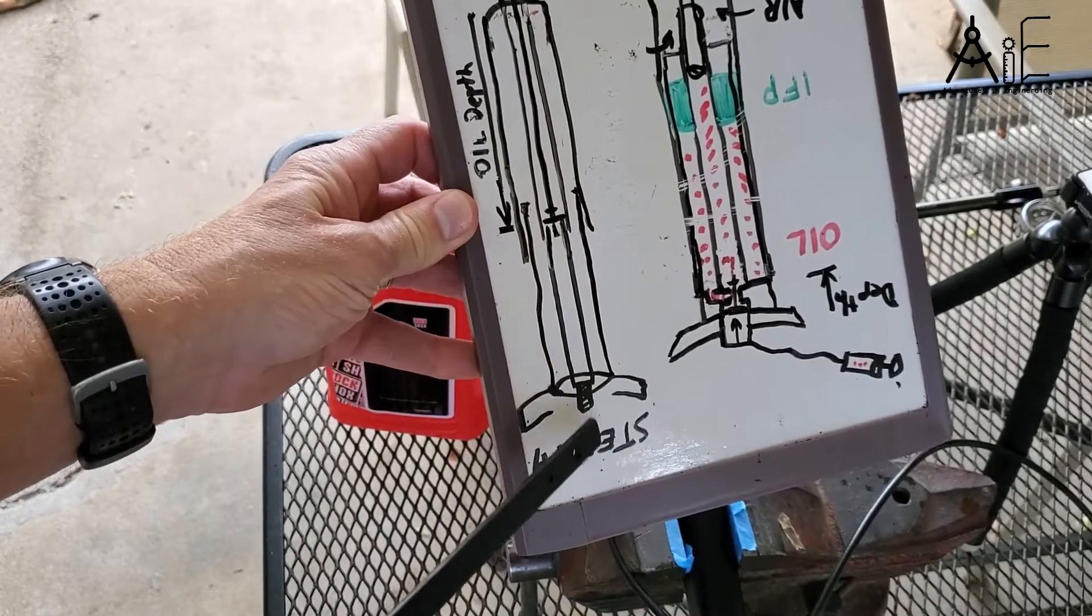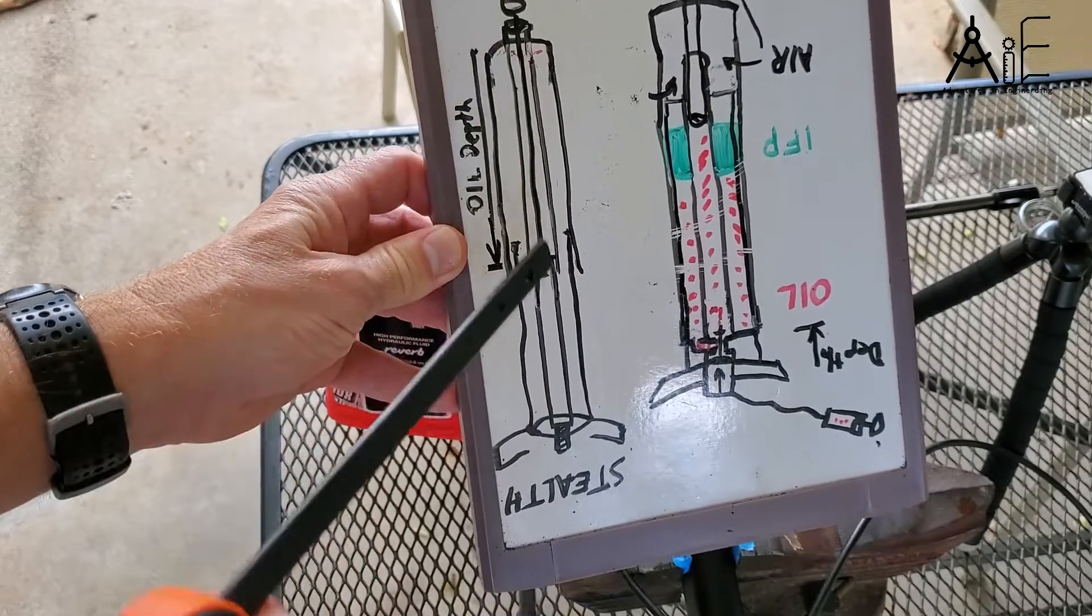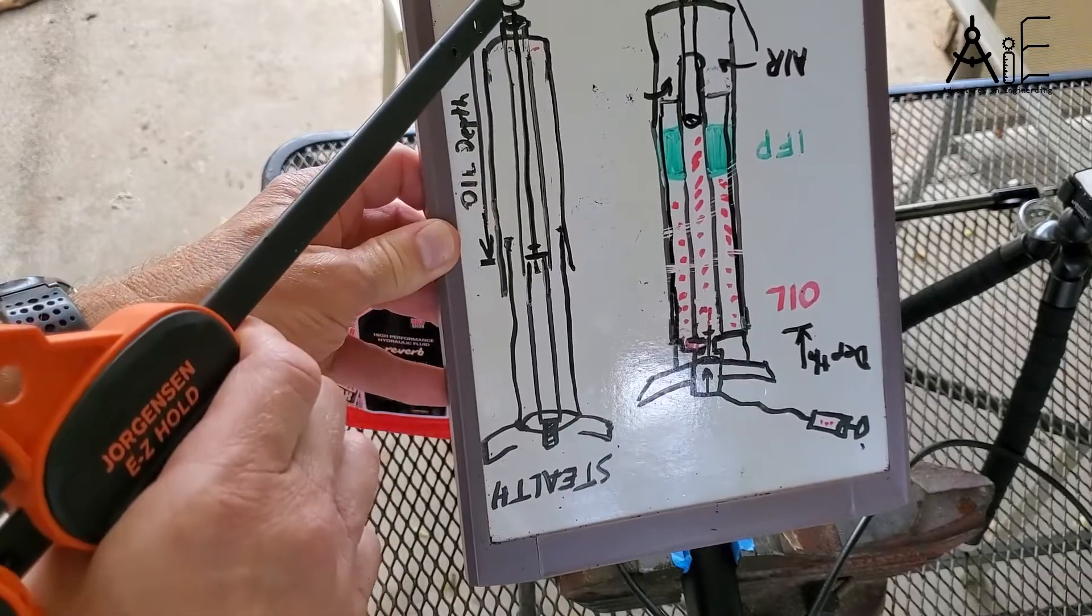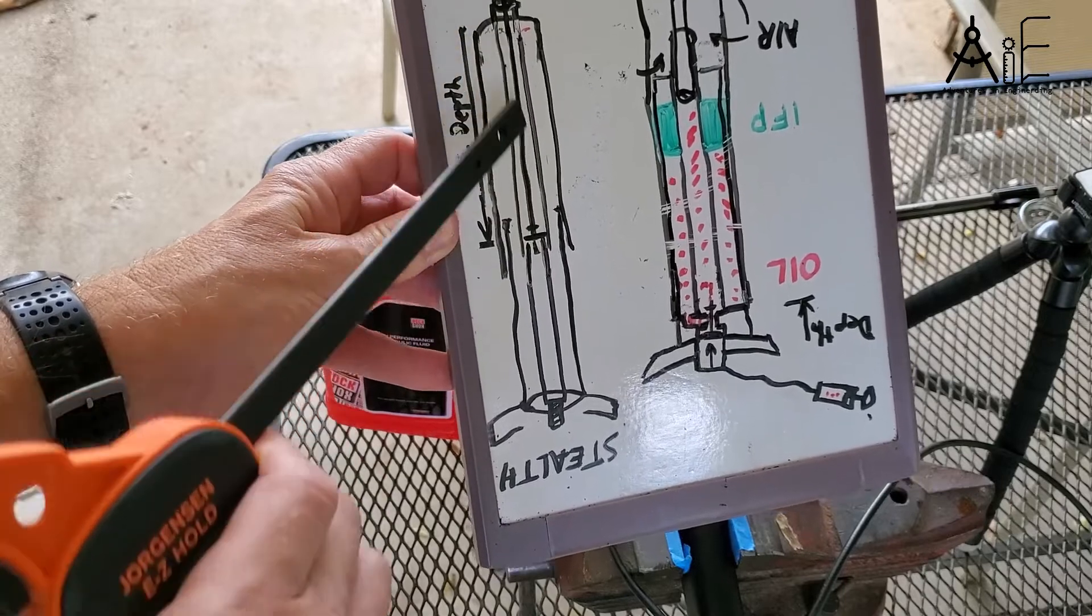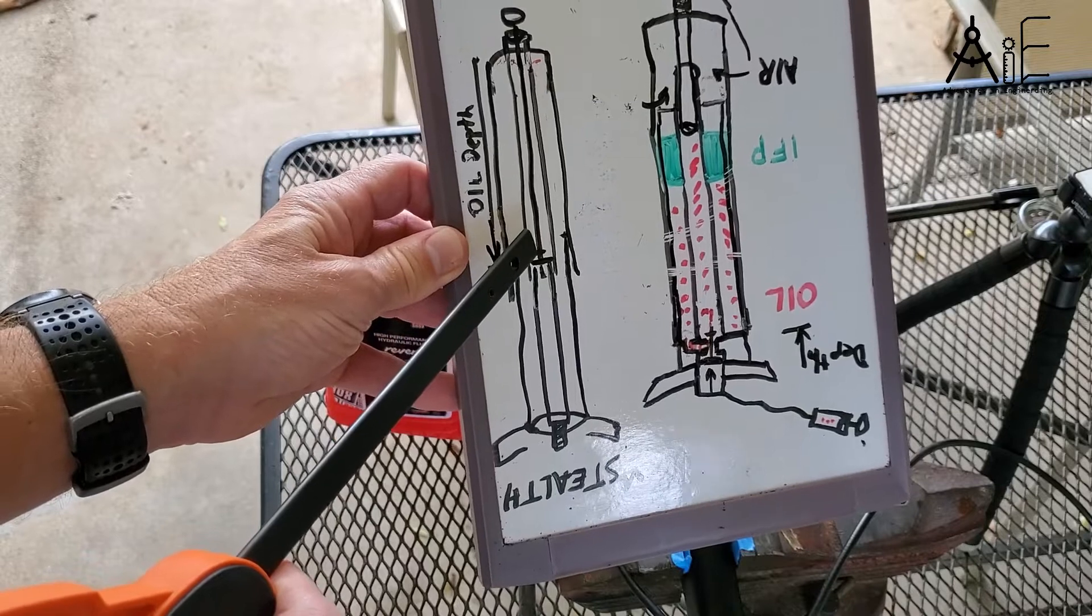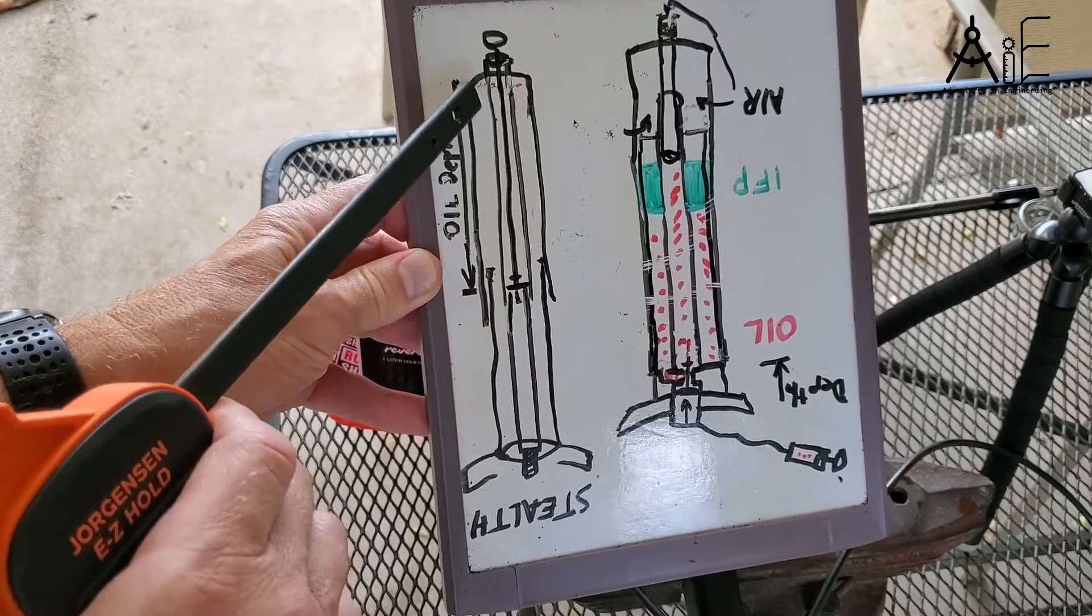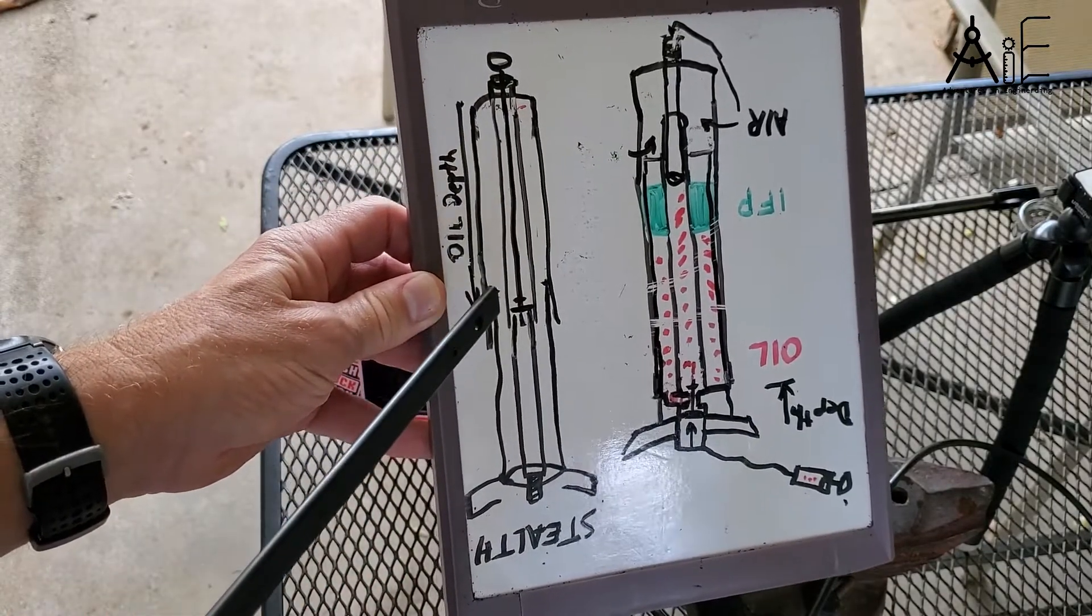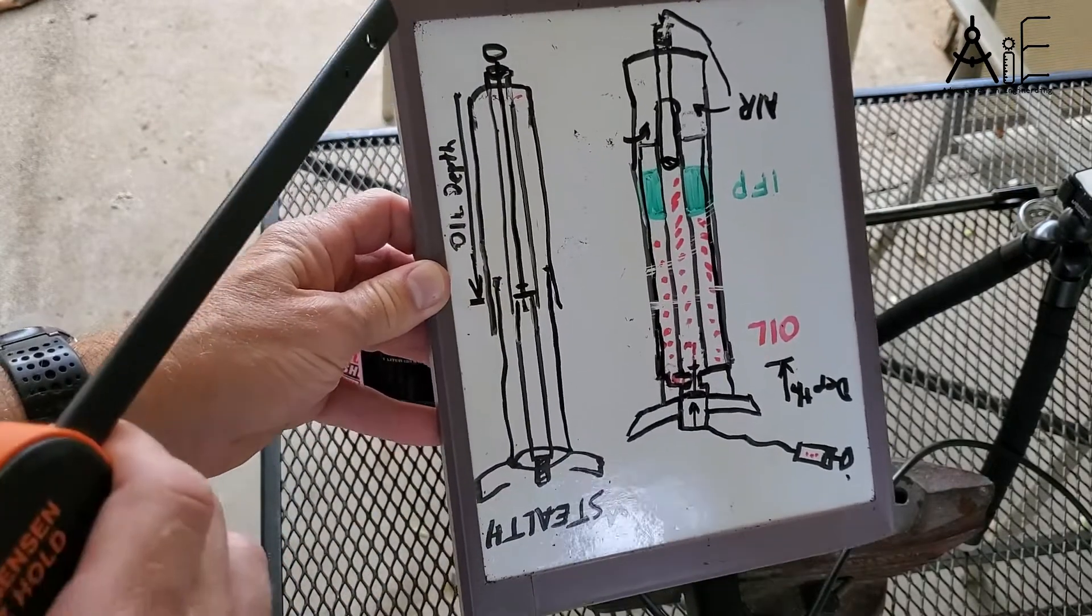But essentially, you do everything the same, but you flip the shock upside down to do it. You let the air out at where the seat post is at the bottom now. Then you're going to deal with your hydraulics from the top. You're going to clamp the post, pull out the actuator and the poppet valve, add a little bit of oil, verify your depth with an oil depth tool or just add a few drops at a time until you get it right, then seal it all back up, bleed out your actuator, and it should work. It's essentially the same principle, just upside down.